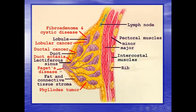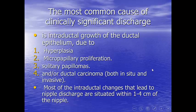We have many pathologies to consider here, mainly we should take care of the nipple and Paget's disease of the nipple. This is the lactiferous sinus. We can have duct ectasia, ductal cancer — either intraductal carcinoma in situ or invasive carcinoma — and proliferation of the epithelium of the ducts forming papilloma, which may be single or multiple, and ductal hyperplasia. The most common cause of clinically significant discharge is intraductal growth of the ductal epithelium, due to hyperplasia, micropapillary proliferation, solitary papillomas, and/or ductal carcinoma in situ and invasive.